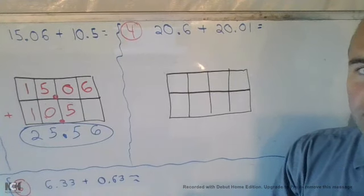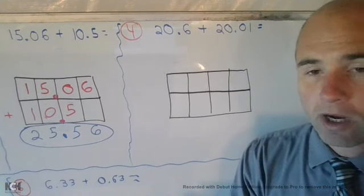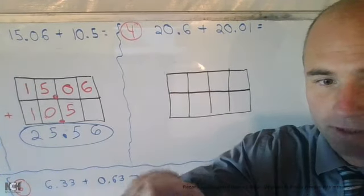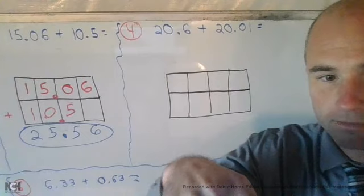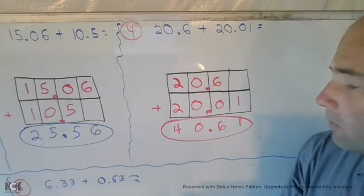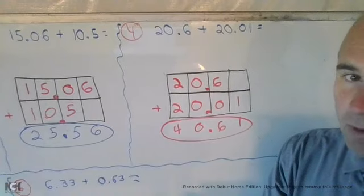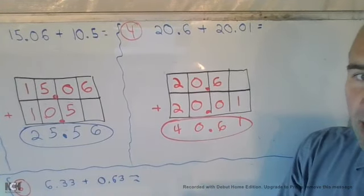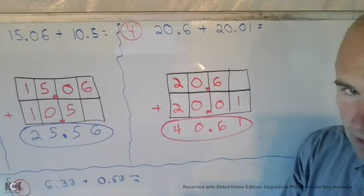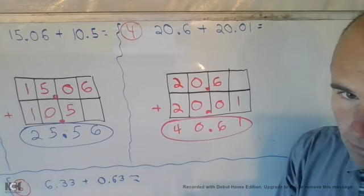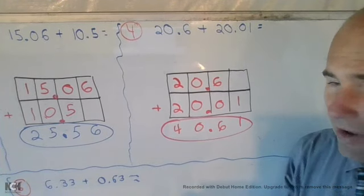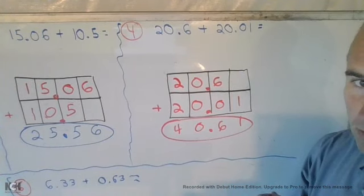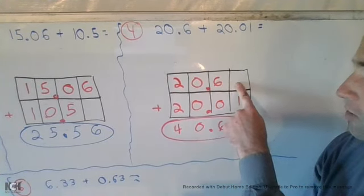At number 4, we have 20 and 6 tenths plus 20 and 1 hundredth. Go ahead and add these numbers up now. Hit that pause button. So, here we end up, if we lined everything up correctly, we placed our decimals in the correct place, we should have gotten 40 and 61 hundredths. So, if you did not get this, you might have accidentally shifted the digits over in the wrong place values. The 6 would have been in the hundredths accidentally.